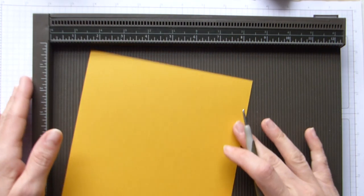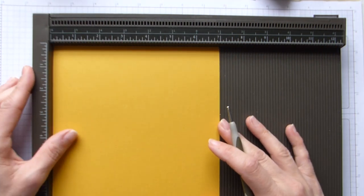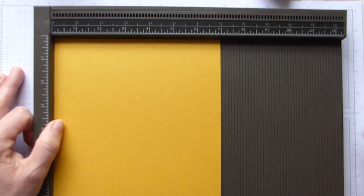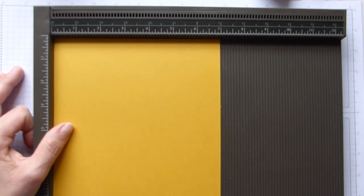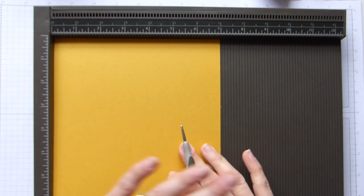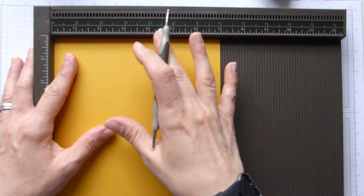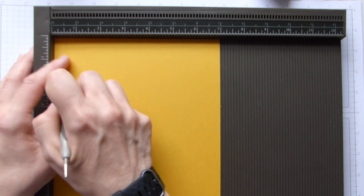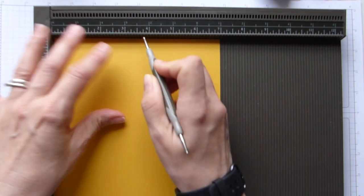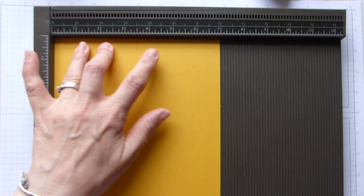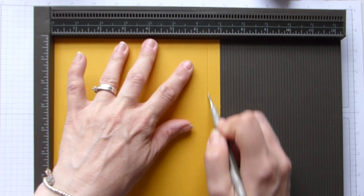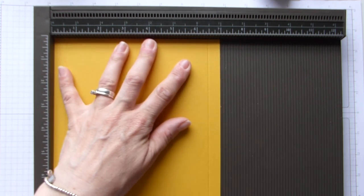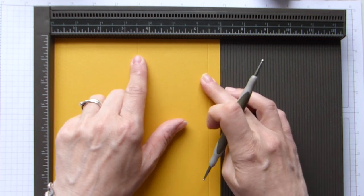Piece B is 7 by 7 inches, which is 17 by 17 centimeters, and obviously with it being a square you just pick a side and we score at half an inch, three and a half, and six and a half, which is one centimeter, eight and a half, and 16.